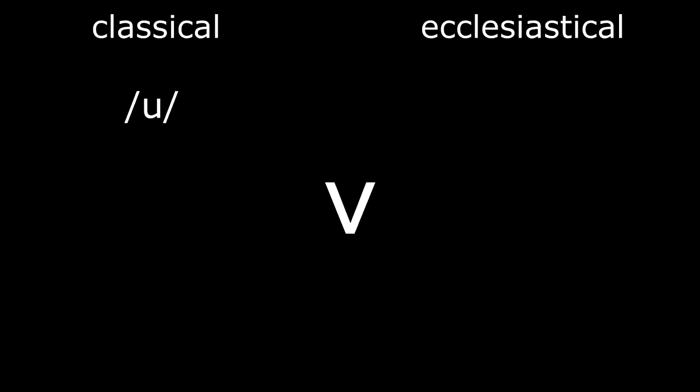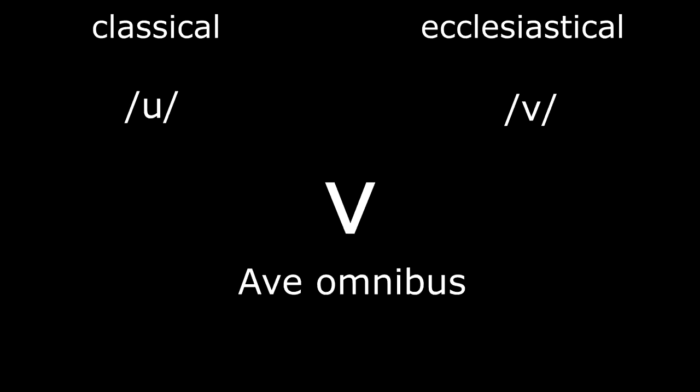Another sound I would like to examine is the V sound. In Classical Latin, this letter is always pronounced as a 'U' sound. In Ecclesiastical Latin, being closer to Italian, it is instead pronounced with a 'V' sound. So at the beginning of the video, when I say 'Ave omnibus', I'm actually using Ecclesiastical Latin, because 'Ave' in Classical Latin would have been 'Awe omnibus'. An example of this is the very famous phrase: in Classical Latin, 'Weni, Widi, Wiki', which in Ecclesiastical Latin is read 'Veni, Vidi, Vici'.